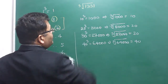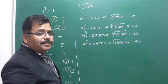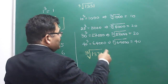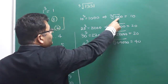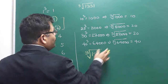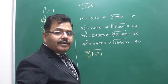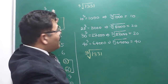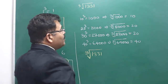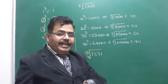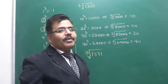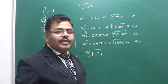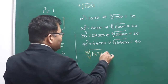Now, 1331 is a number which lies between 1000 and 8000, so the answer lies between 10 and 20. The unit place digit 1 ensures that if there is 1 at the unit place of the original number, then the cube root must also have 1 at its unit place. So the number lies between 10 and 20 with unit place 1 — that is 11 of course. So the answer is 11.